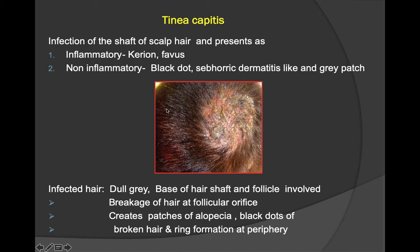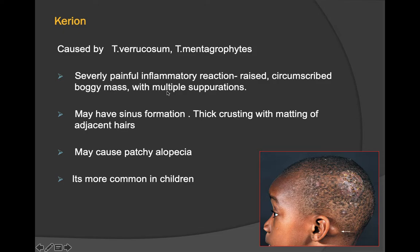Tinea capitis is the infection of the shaft of the scalp hair. It presents as inflammatory lesions called kerion and favus, and non-inflammatory lesions called black dot, seborrheic dermatitis-like, and gray patch. The infected hair appears dull gray, the base of the hair shaft and follicle are involved, with breakage of hair at the follicular orifice, patches of alopecia, black dots of broken hair, and ring formation at the periphery.